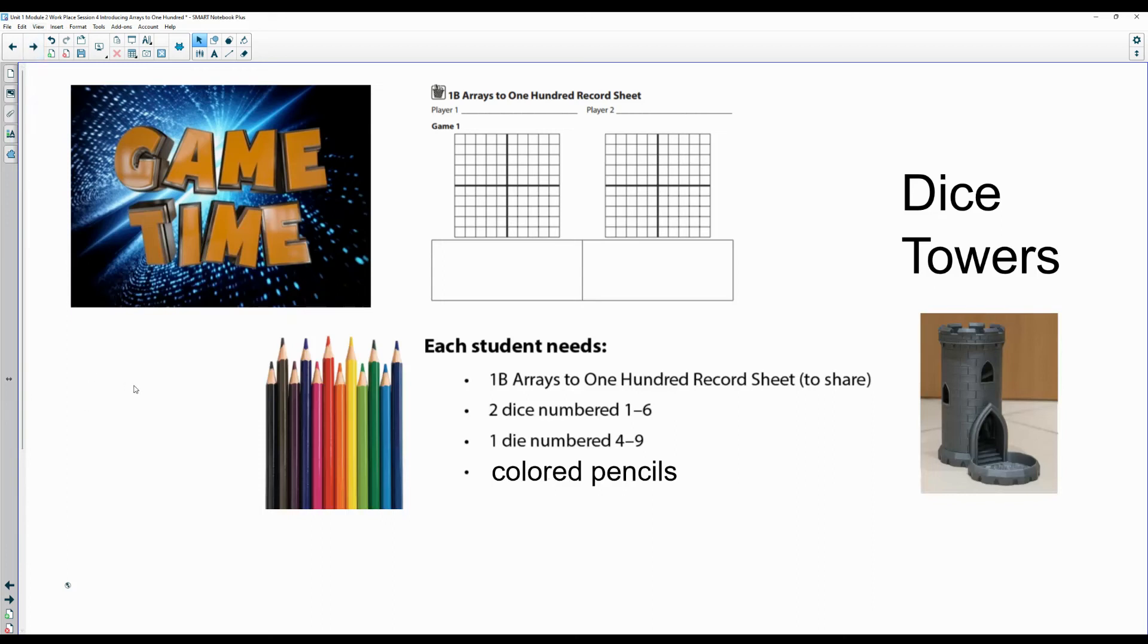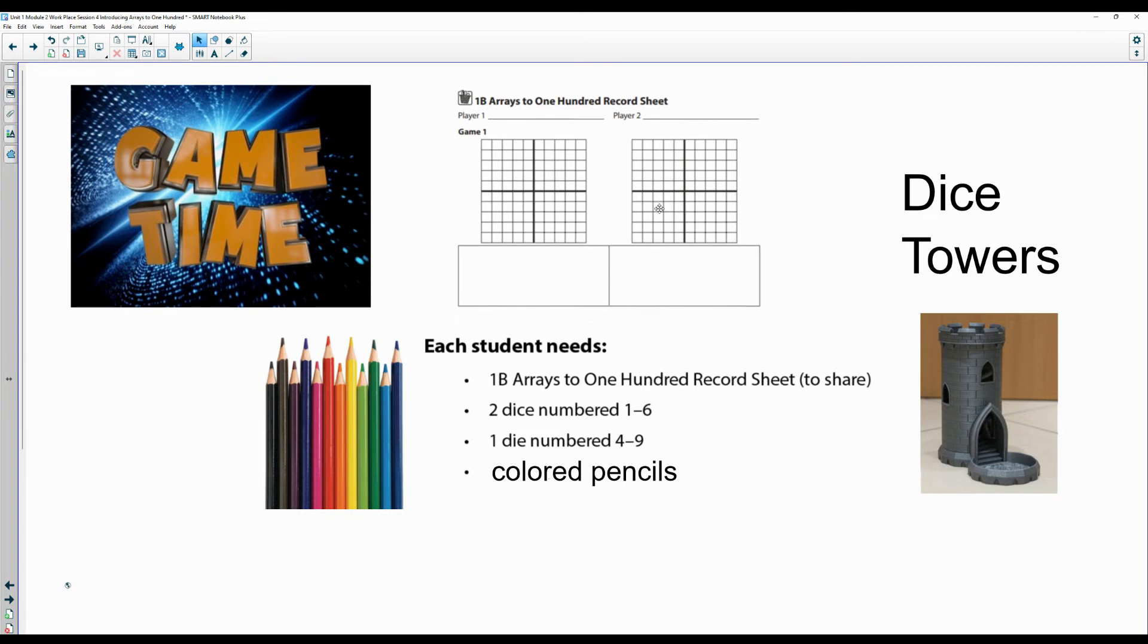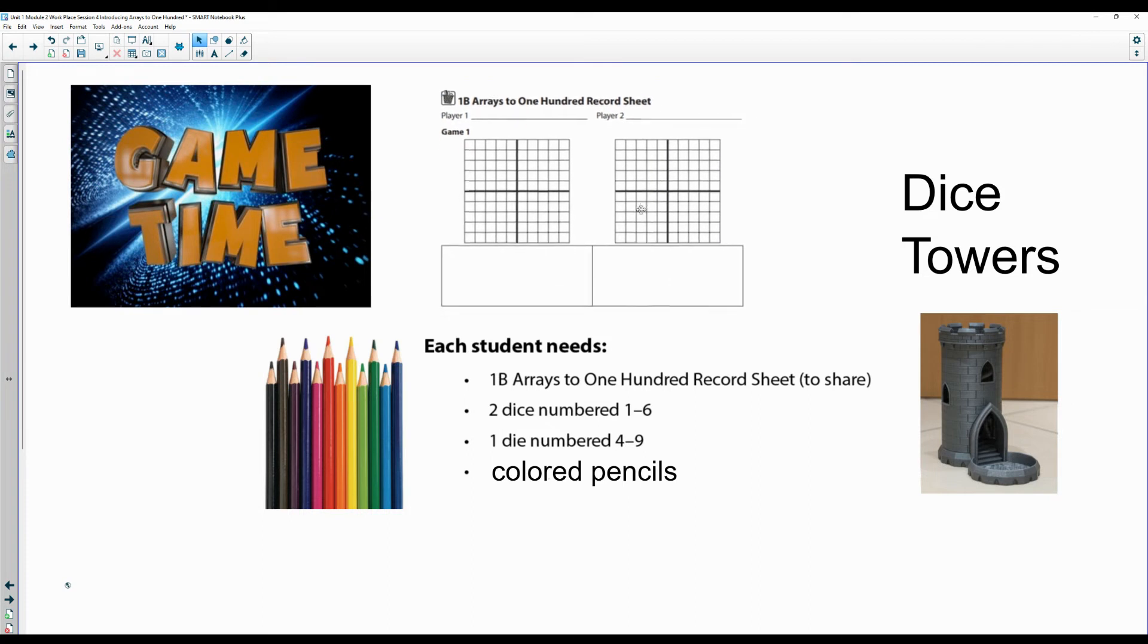Alright, we're going to be playing a workplace game called 1B Arrays to 100. You just need one of these sheets to share between you and your partner, the three dice - two numbered one through six, one die numbered four through nine - and some different colored pencils you'll be sharing.